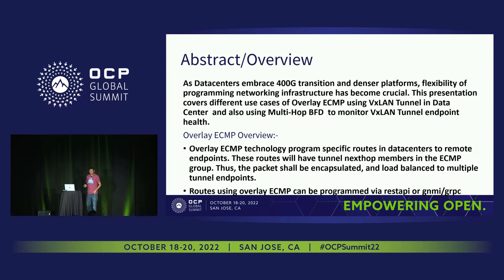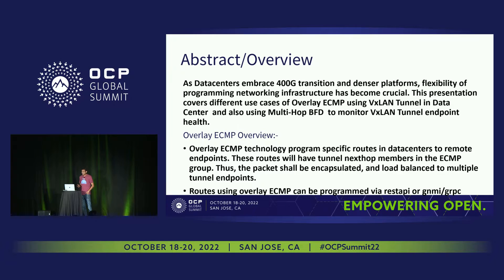As we move to higher bandwidth data centers with the adoption of 400 gig technology, we need more flexibility in programming the networking infrastructure. One of the use cases for that flexibility is using overlay ECMP with VXLAN tunnels. We also use multi-hop BFD sessions to monitor those VXLAN tunnels.